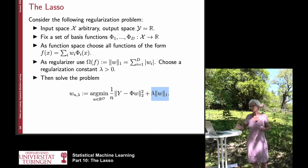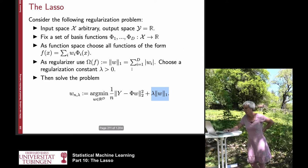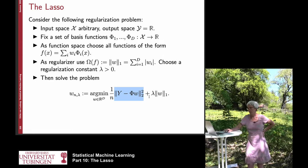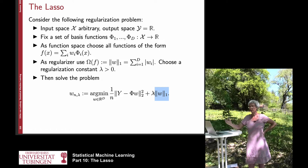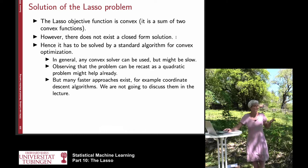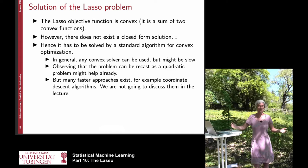The LASSO objective function is convex. The least squares loss function is convex — we have seen this many times — and the L1 norm is also a convex norm. So the sum of these two convex functions is again a convex function. However, as opposed to ridge regression and ordinary least squares, we cannot compute an analytic solution anymore. We cannot just take the derivative and solve it with a formula. In this case we really need to run an optimization algorithm to find the solution.